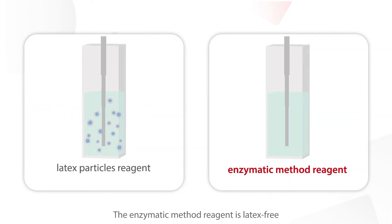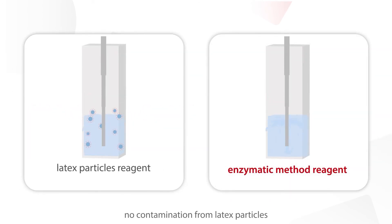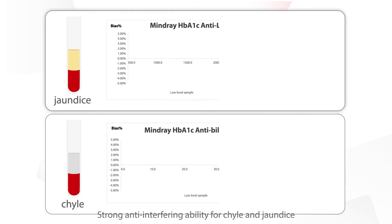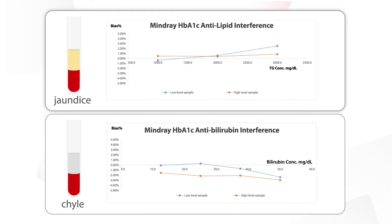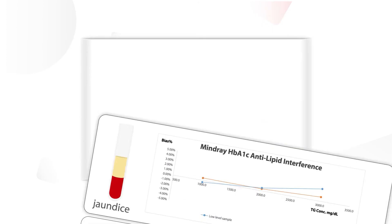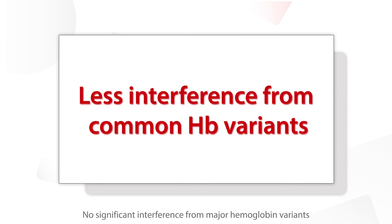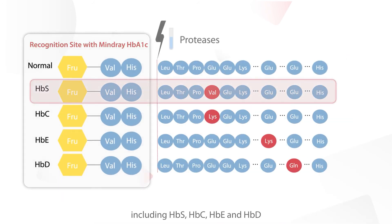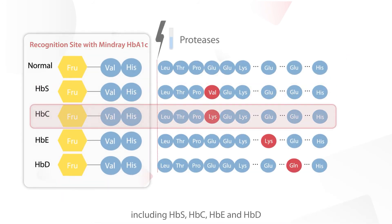The enzymatic method reagent is latex-free with no contamination from latex particles, less frequent cuvette replacement, and less carryover. It also has strong anti-interfering ability for chyle and jaundice, and no significant interference from major hemoglobin variants including HbS, HbC, HbE, and HbD.